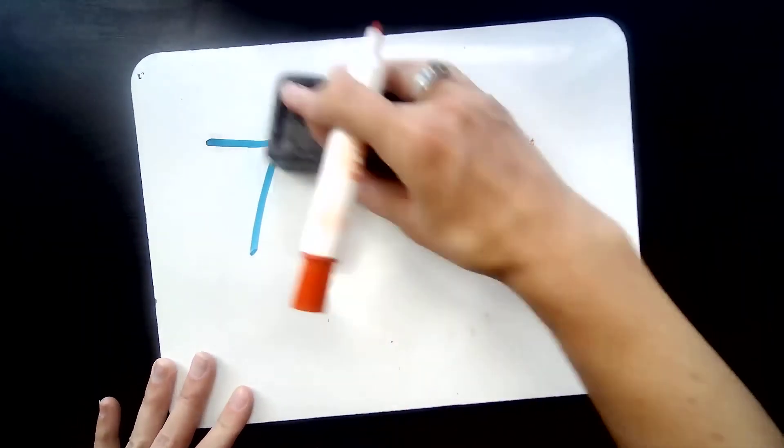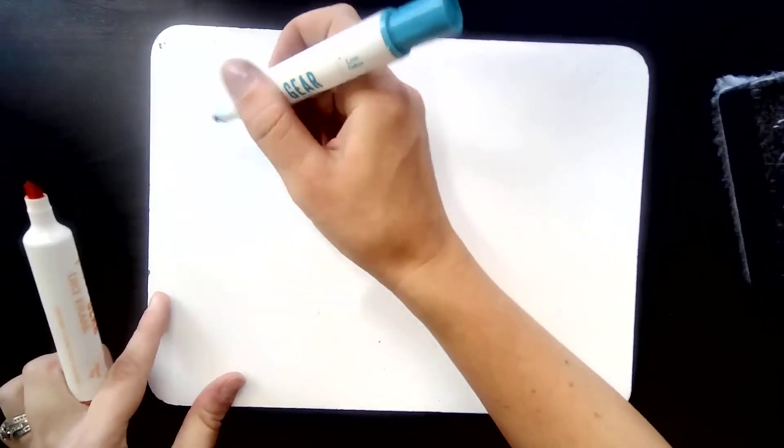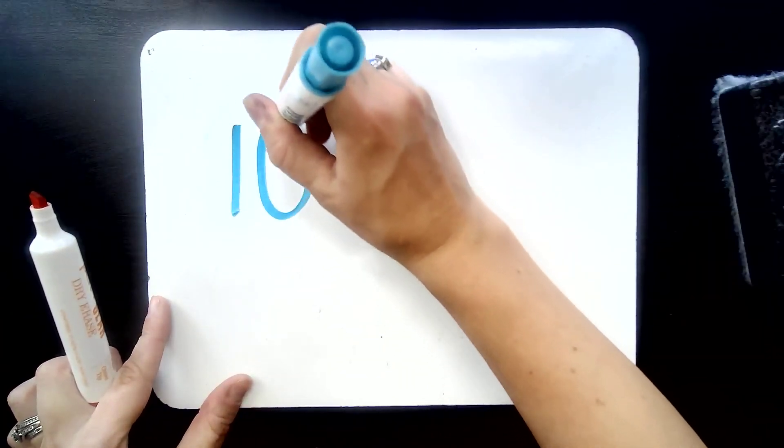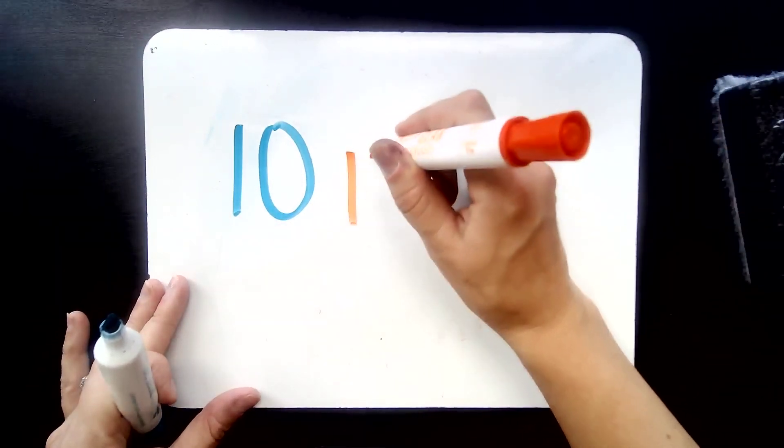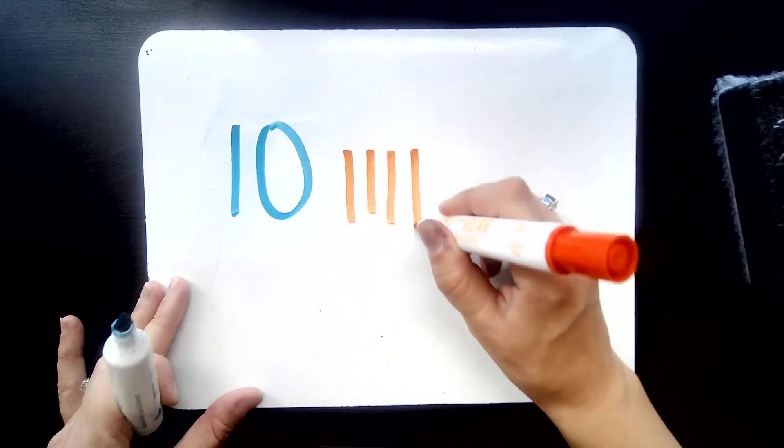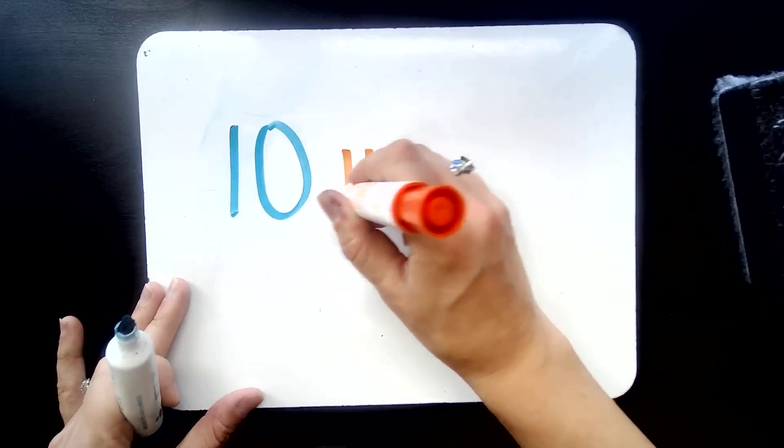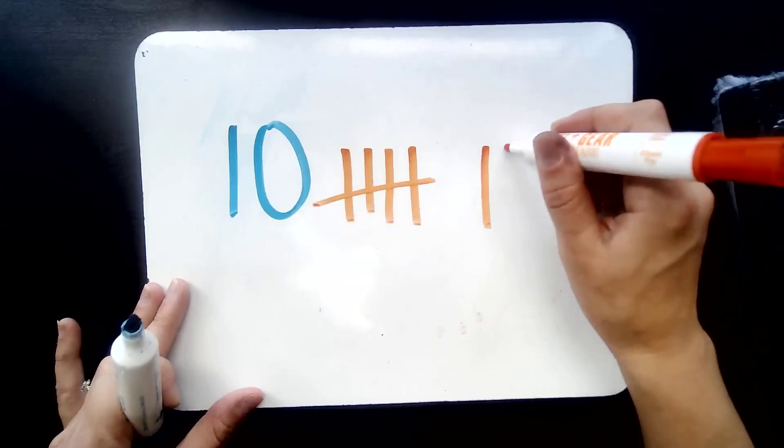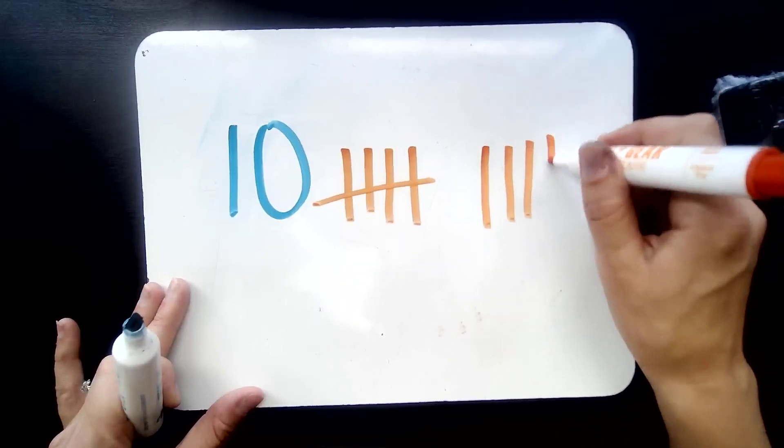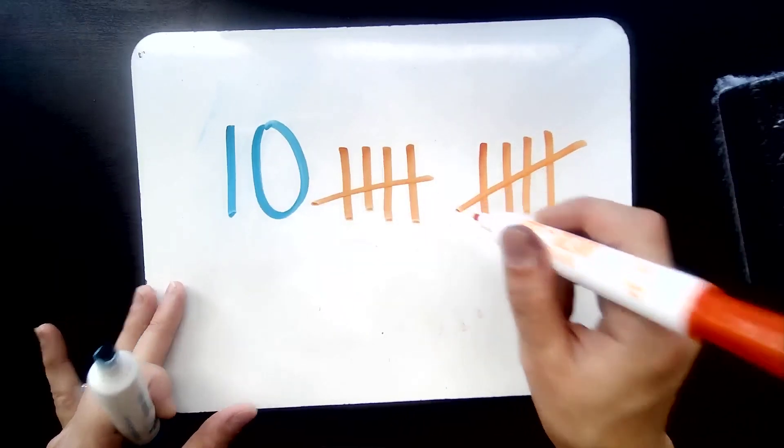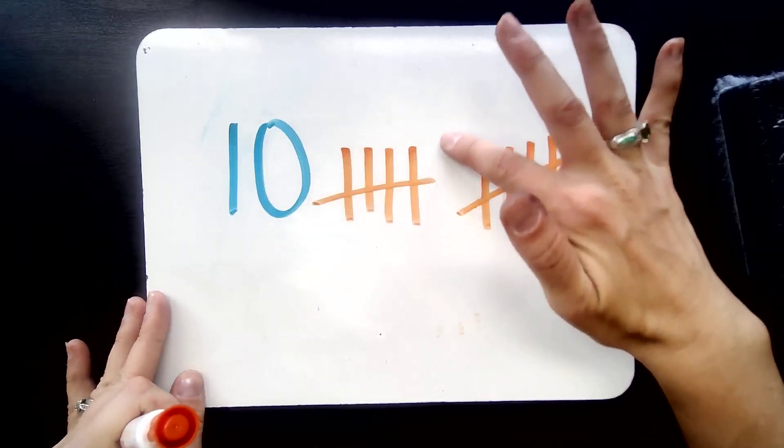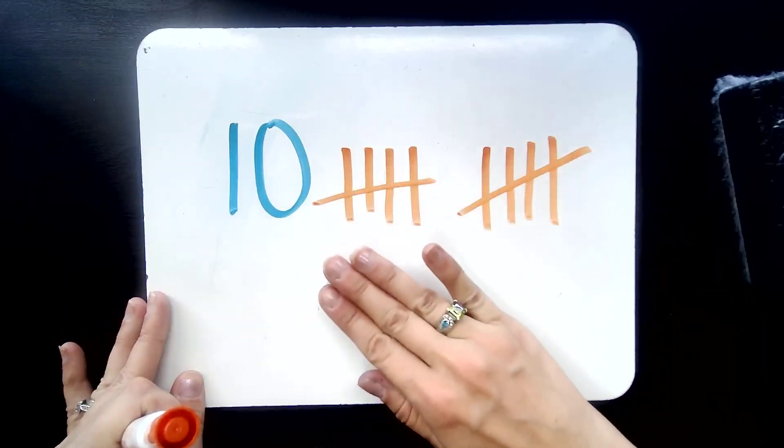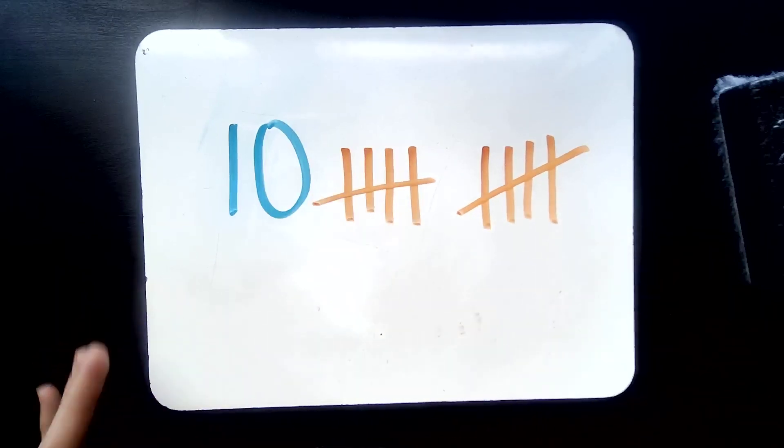One last one. Let's do the big number. Let's do 10. We're gonna have to sing our whole tally song to get 10 tallies. Here we go. One, two, three, four. Number five shuts the door. Six, seven, eight, nine. Number 10 draws the line. I needed two gates this time to get up to that number 10. And once again, I have the little hole or space in between the groups so that I can clearly see that I have two groups.